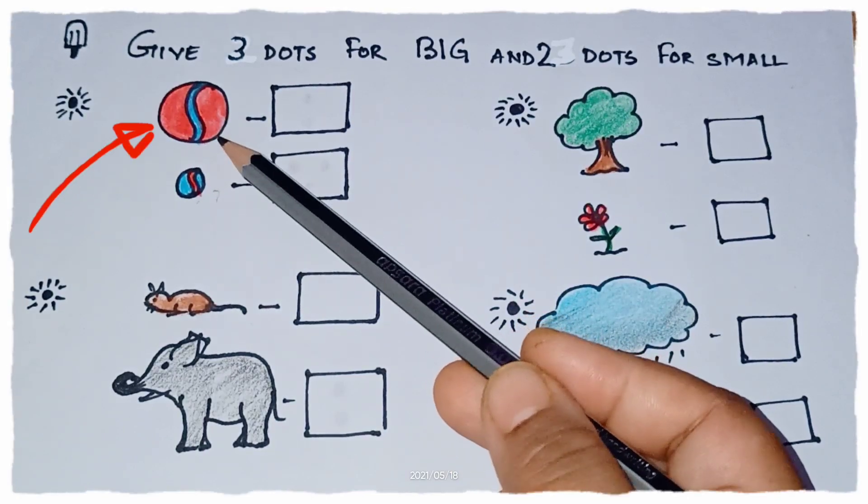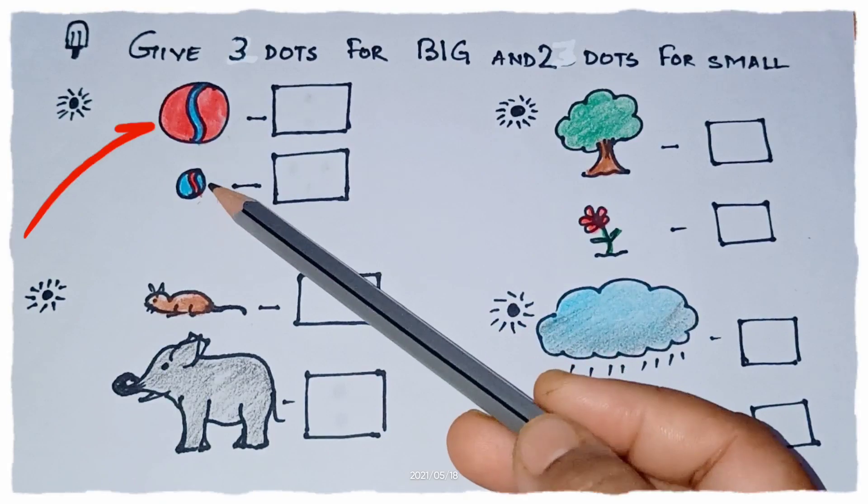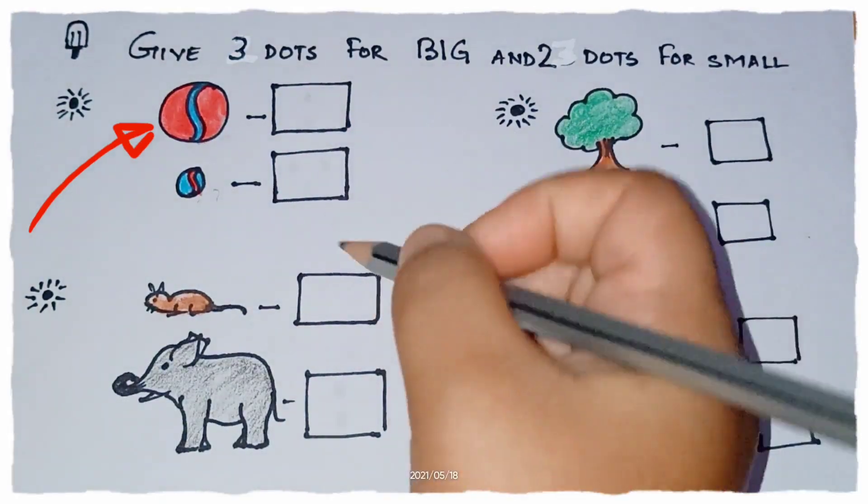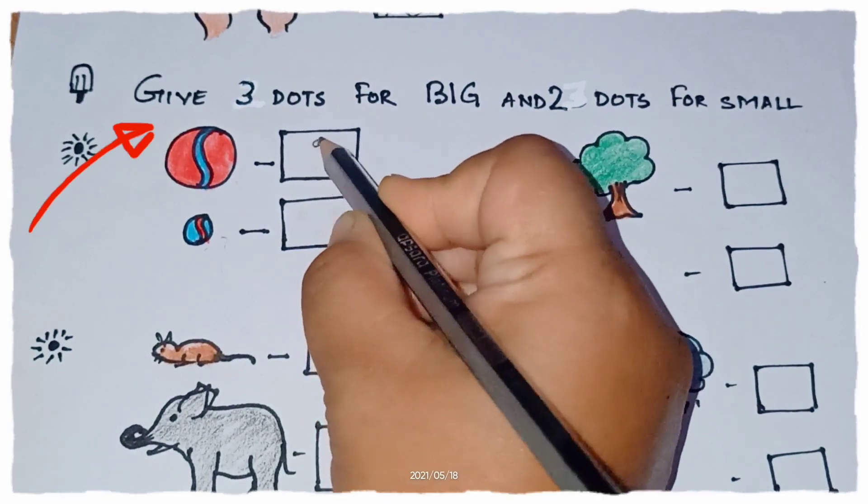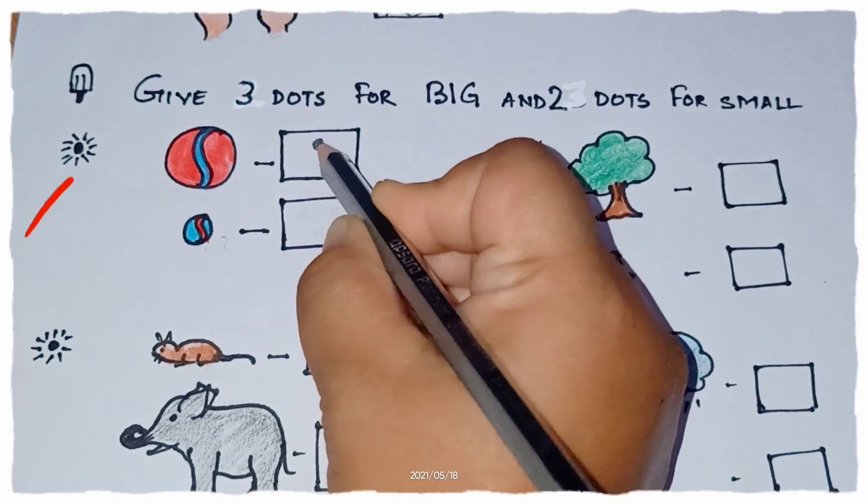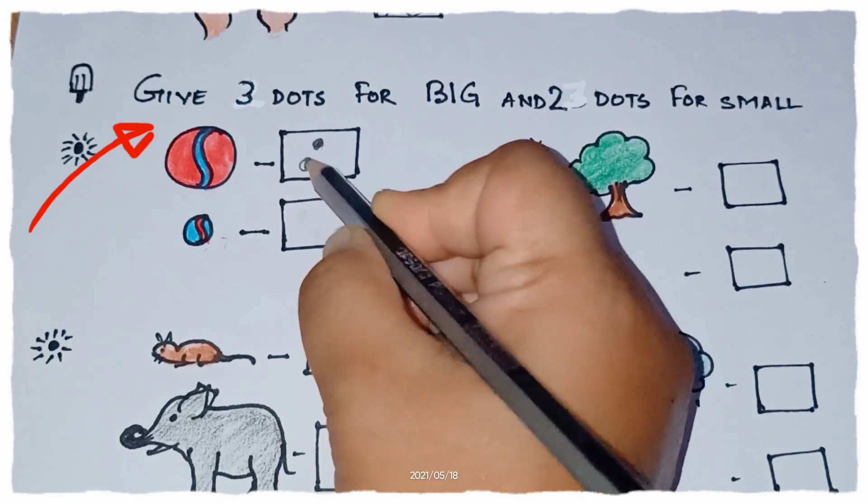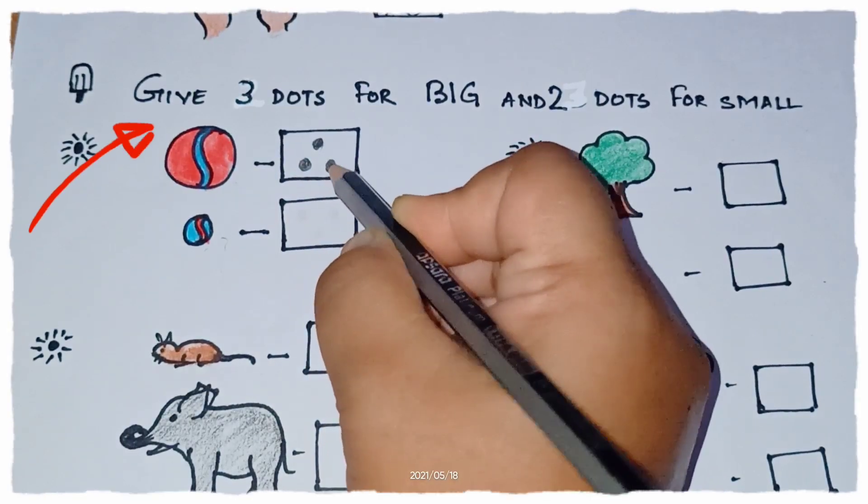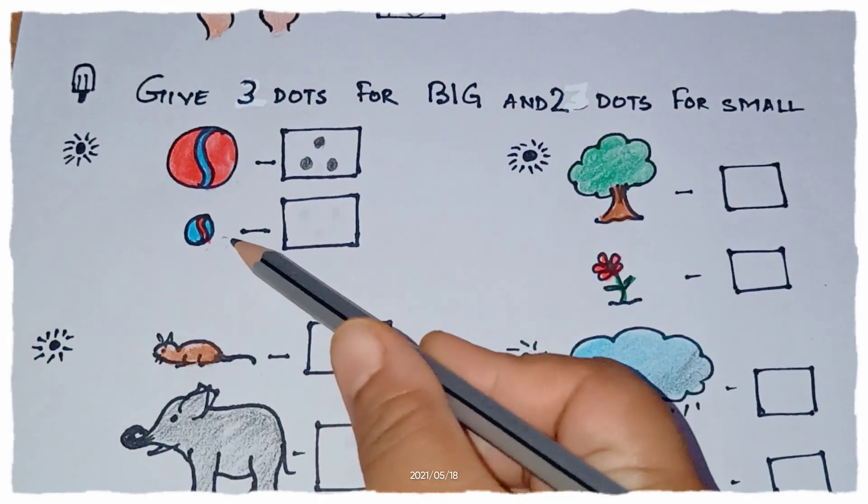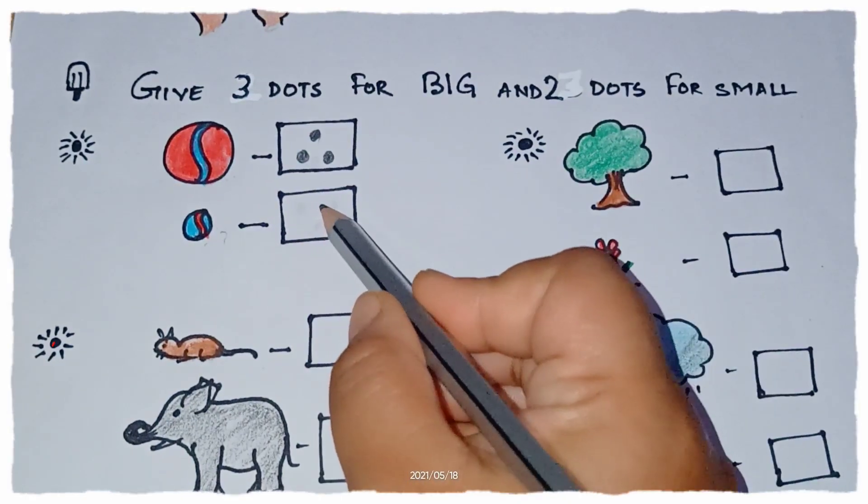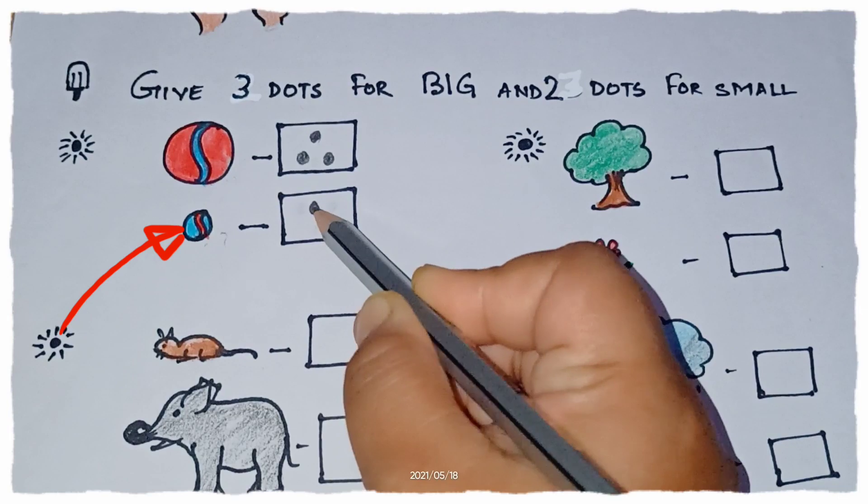The red ball is big. So how many dots we will give? We will give here three dots. How many dots? Three dots for big ball. And how many dots for small ball? Two. So we will give here two dots.